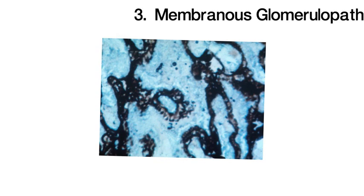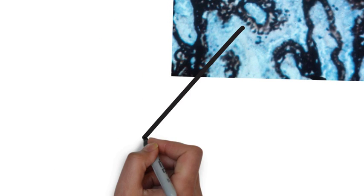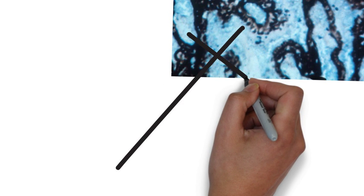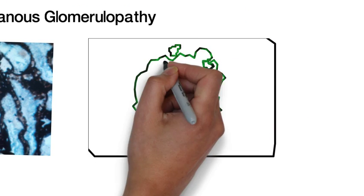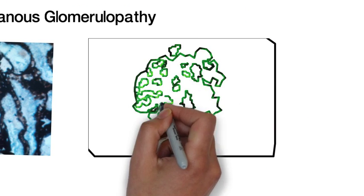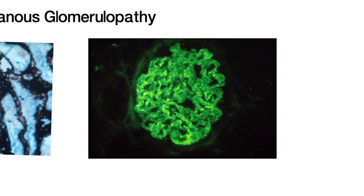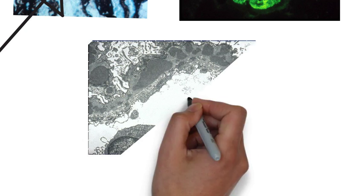And finally, there's membranous glomerulopathy, more common in adults, presents with slowly progressive proteinuria and renal dysfunction, though sometimes this can remit. And on silver stain, you can see these little spikes, which are the electron-dense deposits. Immunofluorescence shows granular deposits.